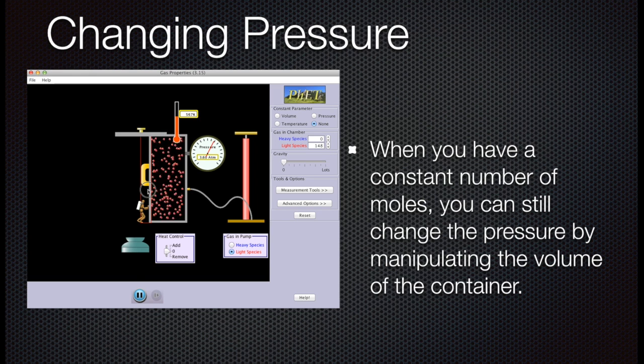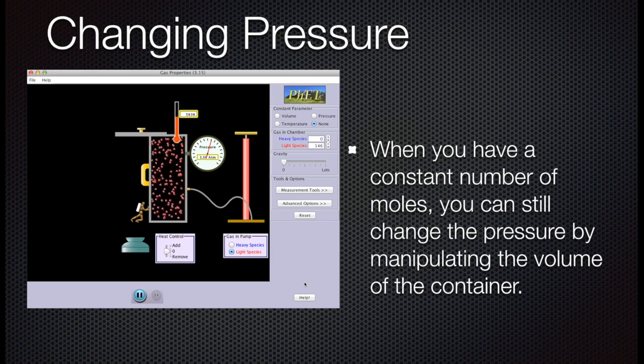And also, we're shrinking the surface area of the container. So we're doing a double effect: we are increasing the force and we are decreasing the area. And that's how you can change pressure in the container.